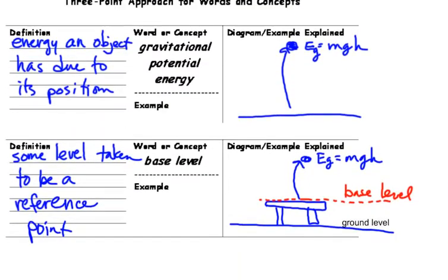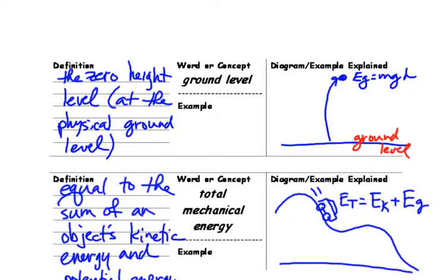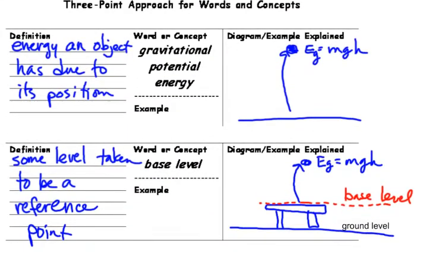Okay. The vocab, I think we just have the one page there. Oh, we have a couple of pages there. So gravitational potential energy, energy an object has due to its position. So if we lift something off the ground and hold it up there, we have our gravitational potential energy, and that will also equal the total energy if it's not moving up there.